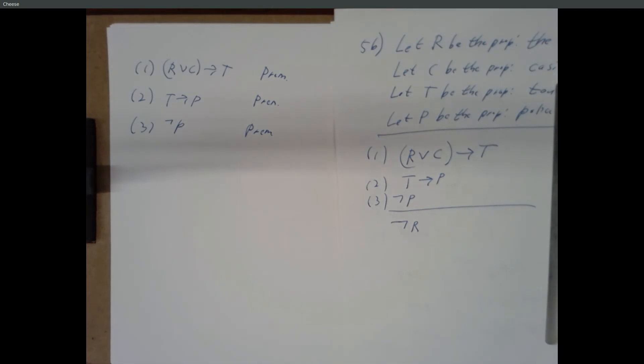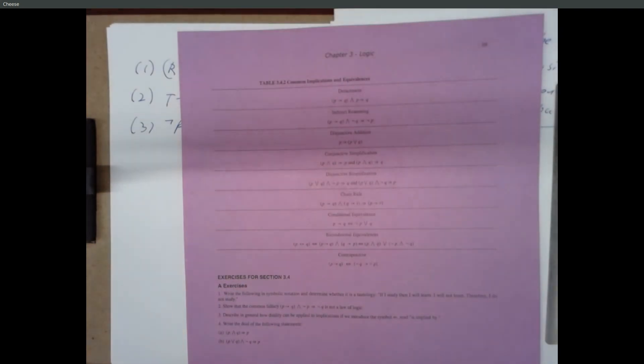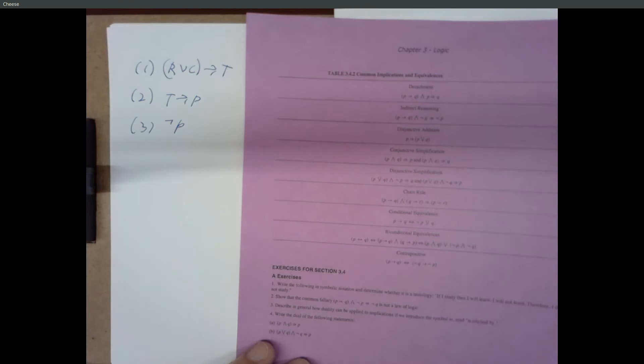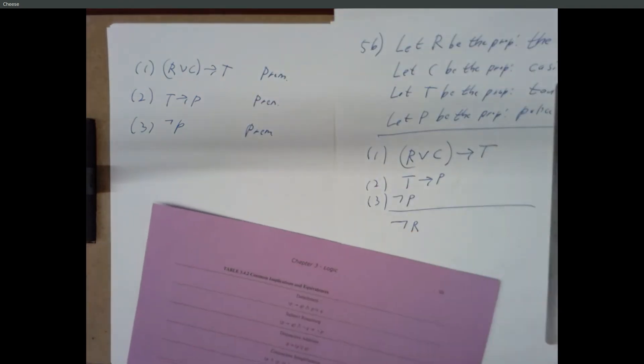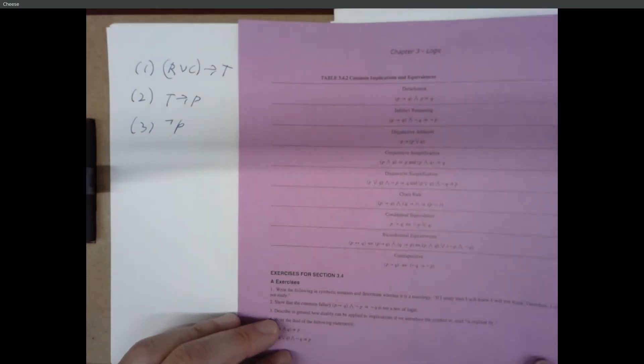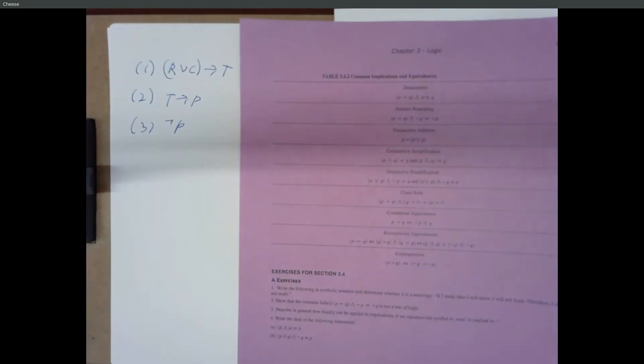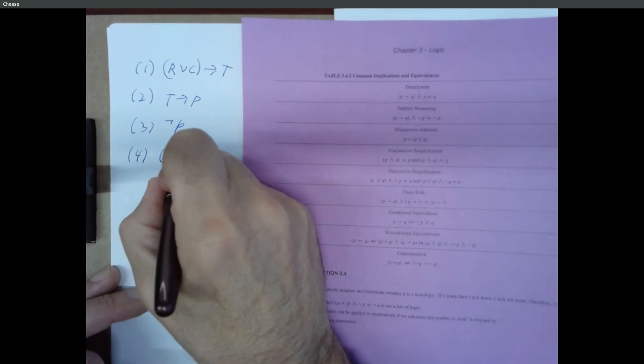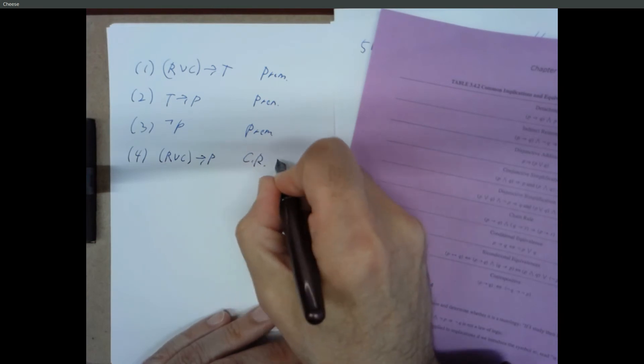So what do you do? You go to your list of implications. And you try to find ways to combine these things or change these things that will let you make new statements. And eventually we're hoping we can make the statement, not R. Well, the only thing involving R is statement one, so we're going to have to do something here. C doesn't pop up anywhere. The casinos aren't mentioned in any other proposition. That's a red herring. It's just there to make the problem interesting or confusing. Well, we've probably got to do something with T, because that's in the only proposition that has an R. Can we do anything with T? Could do the chain rule on one and two. R or C implies P. That's the chain rule, one and two.